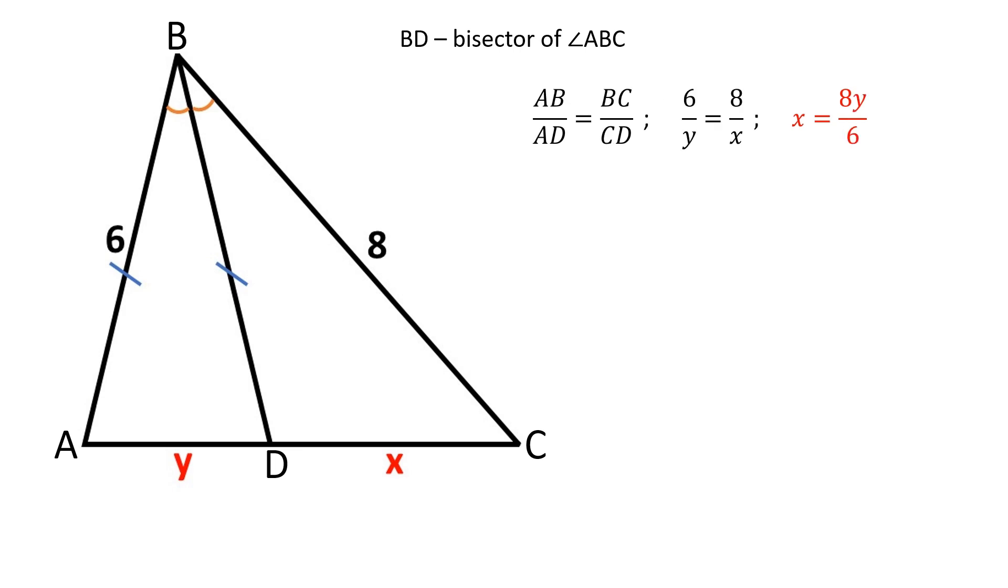x is equal to 8y over 6. Now we can use the following formula for the angle bisector of a triangle.